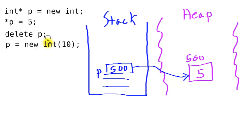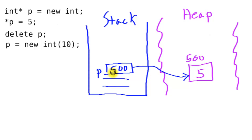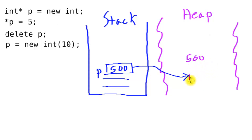To avoid creating garbage, before reassigning our pointer p, we should deallocate the int it currently points to. We do this using the keyword `delete`. We say `delete p`, which frees up what p is pointing to on the heap. It doesn't delete the pointer p itself — p stays on the stack until the function it's in terminates.